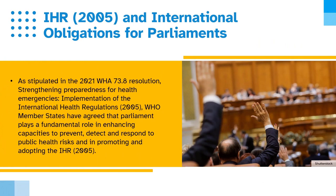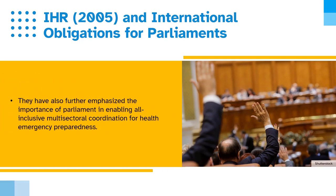What do the IHR 2005 version and the international obligations mean for parliaments? As stipulated in the 2021 WHA 73.8 Resolution on Strengthening Preparedness for Health Emergencies: implementation of the IHR 2005, WHO member states have agreed that parliament plays a fundamental role in enhancing capacities to prevent, detect and respond to public health risks and in promoting and adopting the IHR. They have also further emphasized the importance of parliament in enabling all-inclusive multi-sectoral coordination for health emergency preparedness.